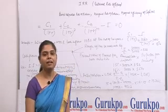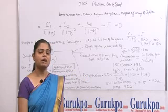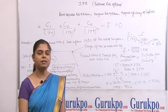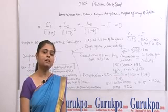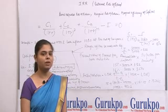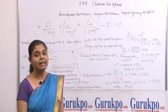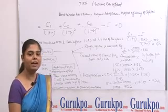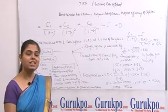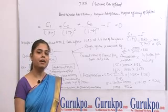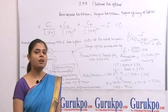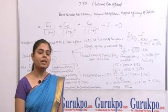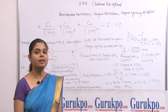The NPV formula is: present value of cash inflows minus present value of cash outflows. If our inflows are more than our outflows, then we accept the project. We reject when the outflows are more than our inflows. In the IRR method, we find that rate which equates the inflows to the outflows. In simple words, NPV is the difference between outflows and inflows, and IRR is the rate at which outflows are equal to inflows.